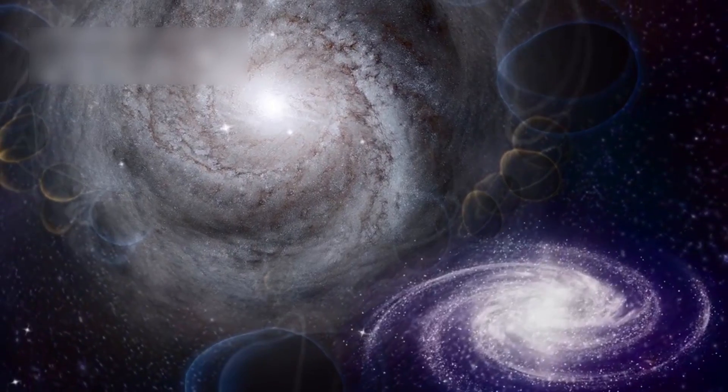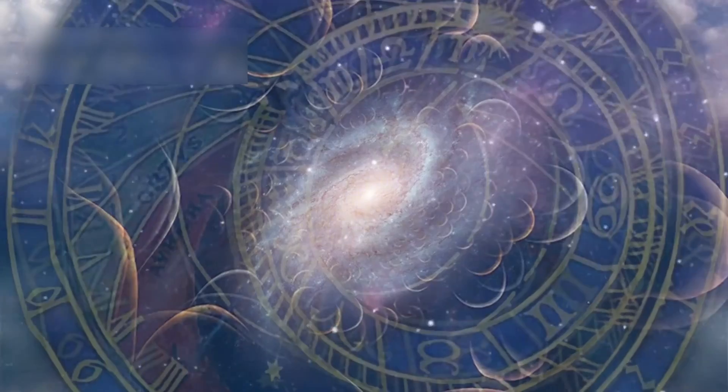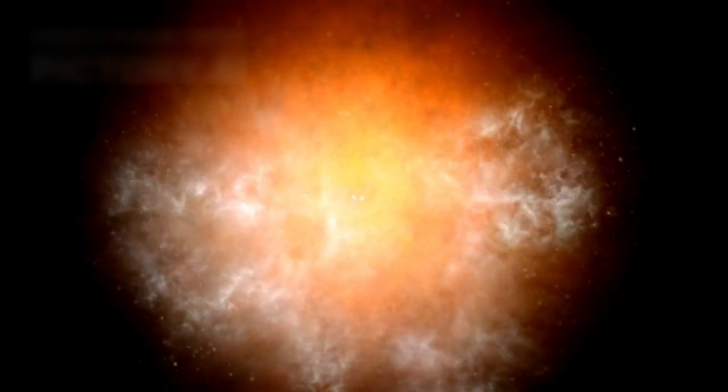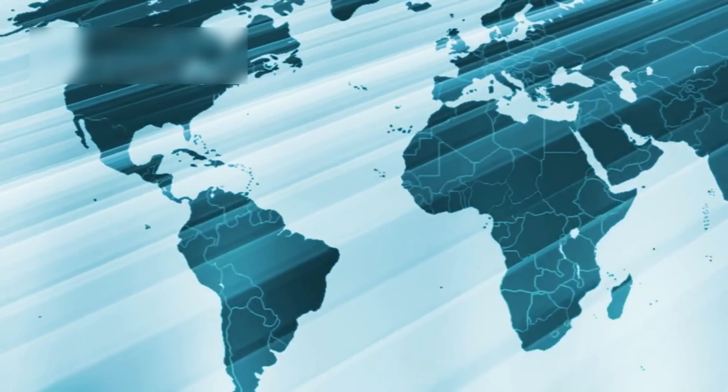It explains why ancient galaxies look strangely old. Maybe they are in a different part of the cosmic clock. If true, the Big Bang wasn't a bang, it was a ripple. We may live in just one wave of existence.